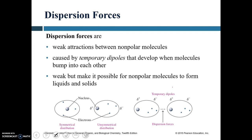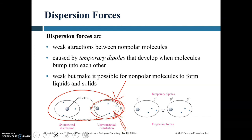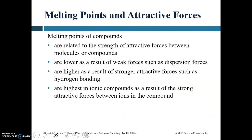In dispersion forces, non-polar molecules form temporary dipoles when they bump into each other, momentarily creating asymmetrical charge distribution. These temporary dipoles interact with each other, creating dispersion forces — this explains why non-polar molecules like bromine can still form liquids. The strength of attractive forces determines melting points: compounds with weaker forces like dispersion have lower melting points, while those with stronger forces like hydrogen bonding or dipole-dipole interactions have higher melting points.